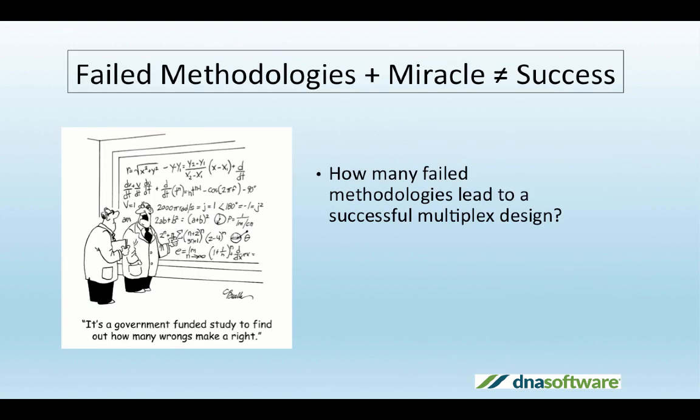But what happens when you have a nice set of primers that work well in a singleplex? Shouldn't you be able to just mix experimentally validated singleplexes into a multiplex with just a few tweaks? You likely are watching this video because you know that assumption is incorrect. In actuality, primers will act differently around other primers and targets, which means that your problems have now gotten ten times more difficult.